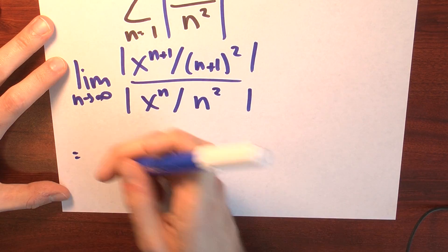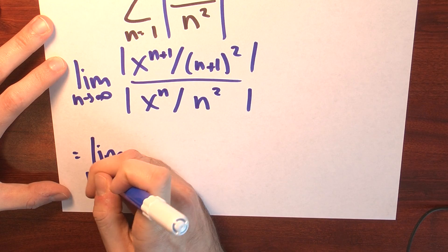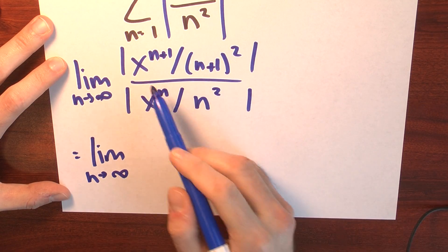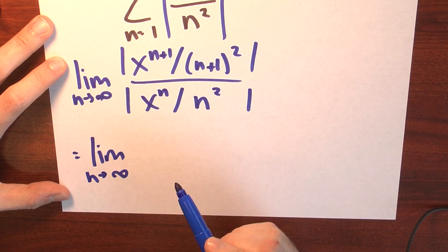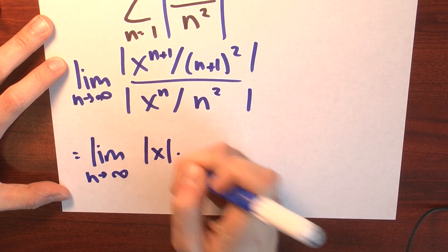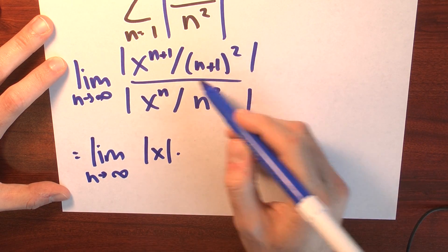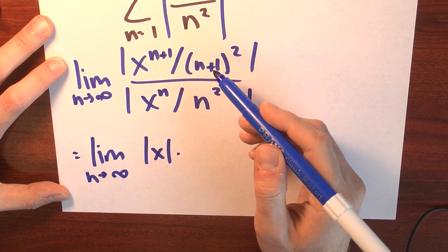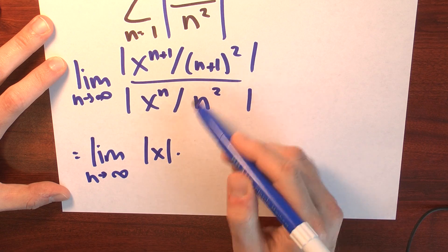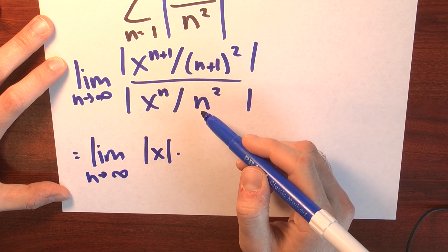This is the limit n goes to infinity of, I've got x to the n plus 1 over x to the n. So, I'll just write absolute value of x. And then I've got n plus 1 squared, but it's in the denominator of the numerator.